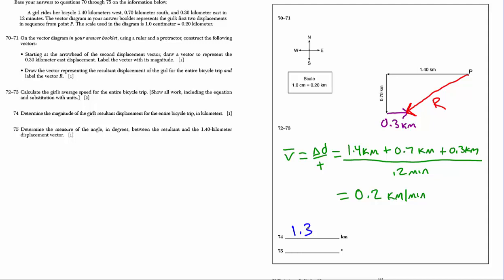Finally, number 75. We want to know the measure of the angle in degrees between the resultant and the 1.4 kilometer vector. So, it's this angle up here, theta. Take your protractor, place it at point P, put the origin at the point. Go ahead and measure that angle. Look at it visually first. You can see it's going to be a relatively small angle. You should get a value of 35 degrees. And again, you get a little bit of flex. Anywhere from 33 to 37 would have been perfectly acceptable.